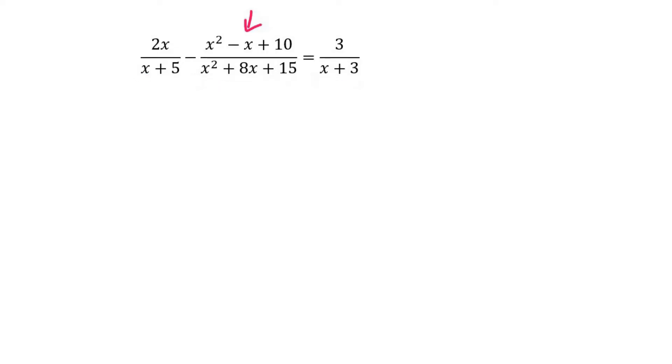So if you can realize that this is a trinomial, if we factorize that, it's going to give us x plus 5 and x plus 3. And that's going to be equal to 3 over x plus 3.